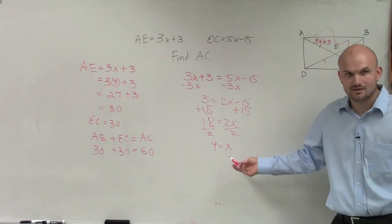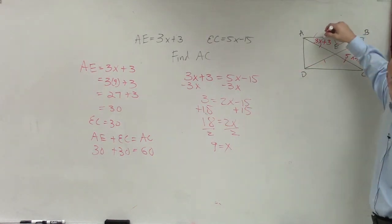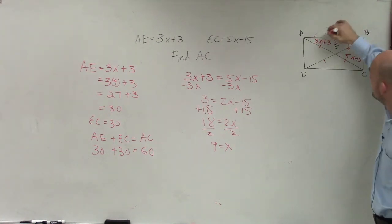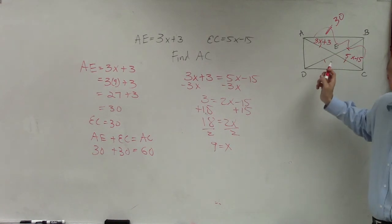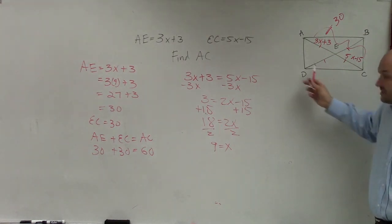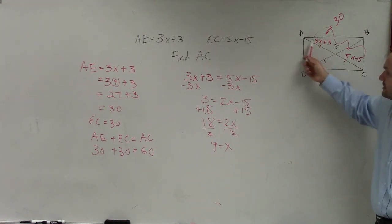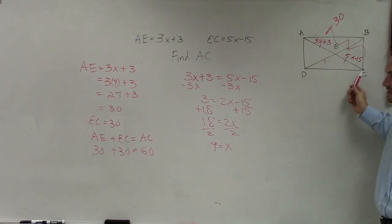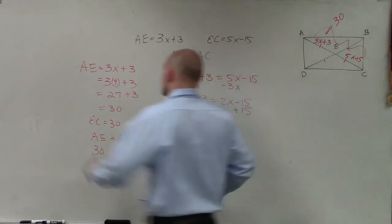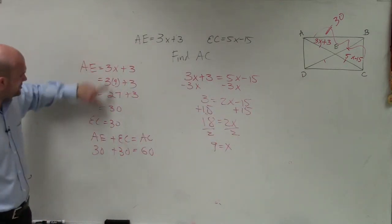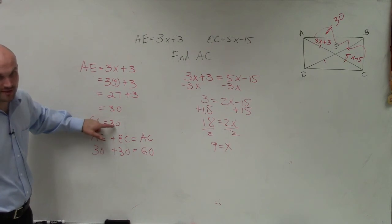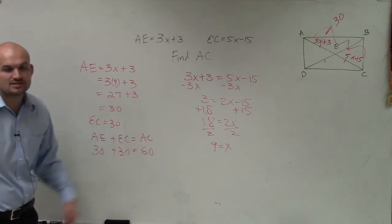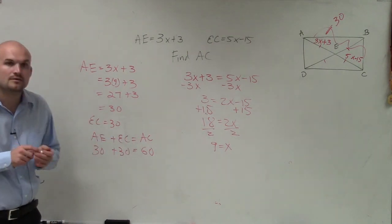OK, do you understand how I found the value of x? All I did is I wanted to find the value of one side of the bisector, which is equal to 30. 30 plus 30 equals 60, right? Because this, do you agree that AE plus EC is equal to AC? Yeah, so I found the value of AE which is 30. I know that EC is also equal to 30. So 30 plus 30 equals 60, which is the length of AC. Make sense?